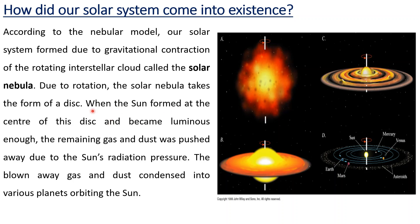When the sun formed at the center of the disk and became luminous enough, the remaining gas and dust was pushed away due to intense radiation pressure. This blown-away gas and dust condensed into various planets orbiting the sun. The remaining materials from the nebula cloud become planets which orbit the sun, because the original nebula disk was rotating.